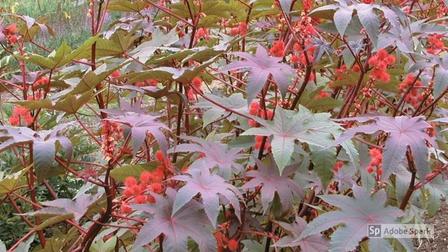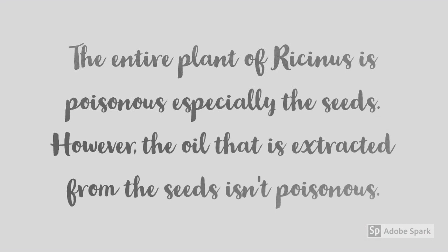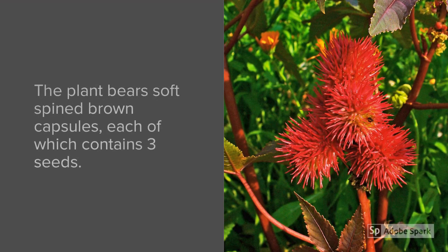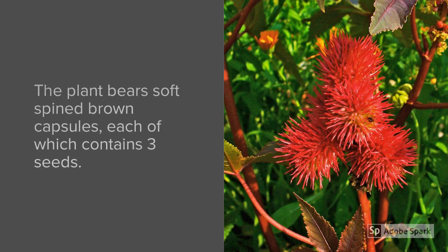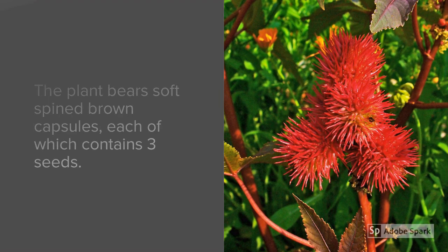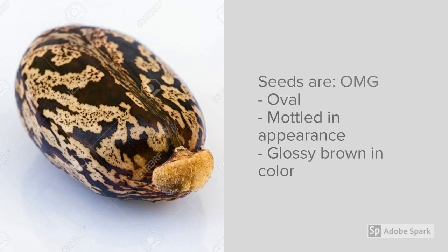It belongs to family Euphorbiaceae. The plant looks attractive, but in reality the entire plant of Ricinus is poisonous, especially the seeds. However, the oil extracted from the seeds is not poisonous, as we shall find out later. This is what a capsule of Ricinus communis looks like — soft, spiny, brownish capsules, each containing three seeds.